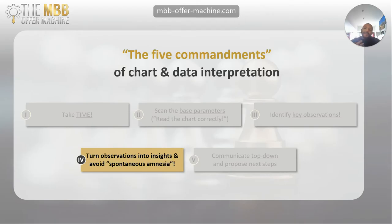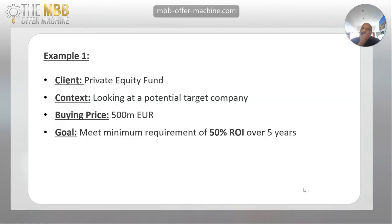So let's quickly look at two examples for this. Example number one: let's assume we have a client — it's a private equity fund — and they look at a potential target company. The buying price would be 500 million euros, and their goal, as for every good private equity fund, is to make money. For this, they have a minimum requirement of 50% return on investment over five years.